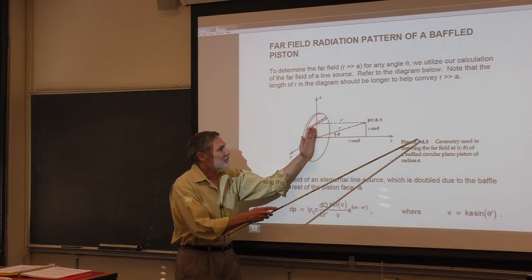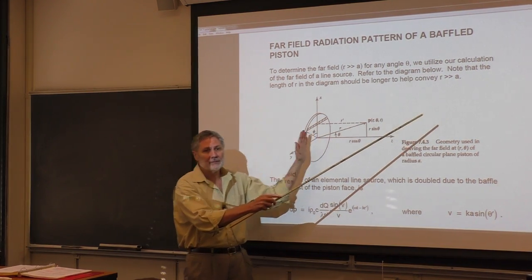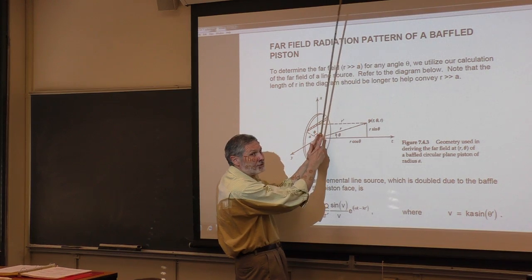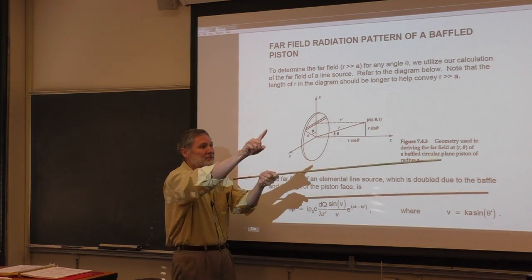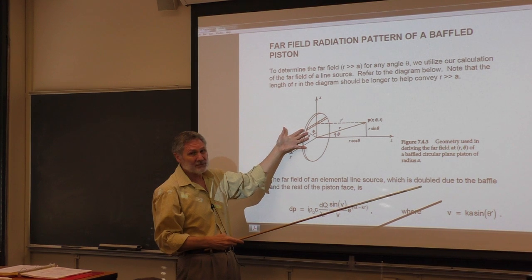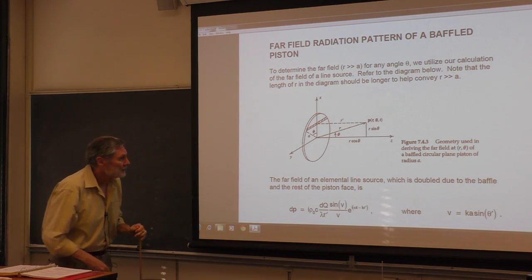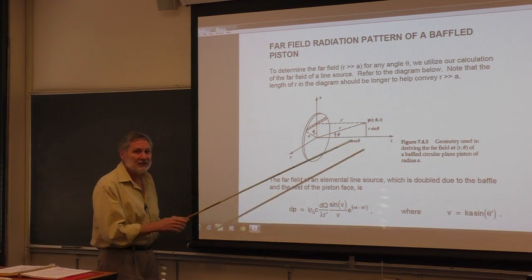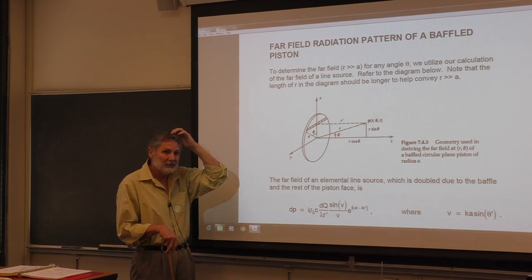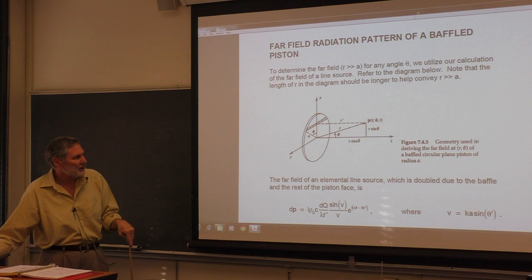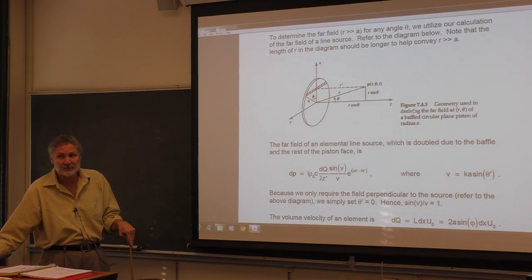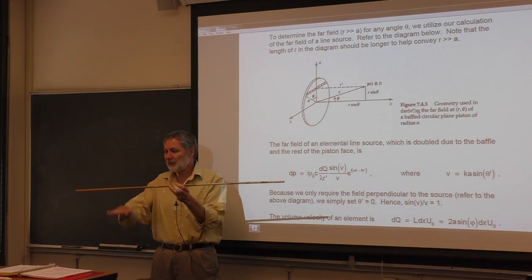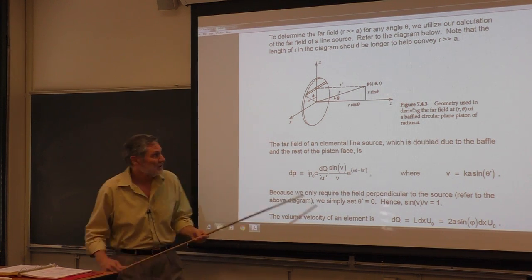Next we look at the radiation pattern in the far field at all angles, from theta equal to zero on the axis to theta equal to 90 degrees. The radiation pattern must be symmetric about the z-axis. We integrated over line sources using our previous solution. You have to double the pressure amplitude because when we solved for the line source it wasn't in a baffle — bringing a baffle close simply doubles the radiated pressure at every point.